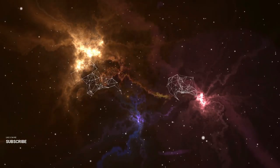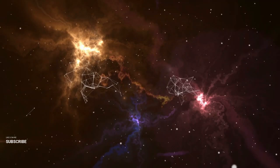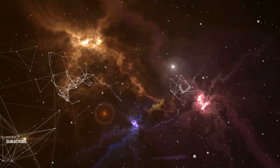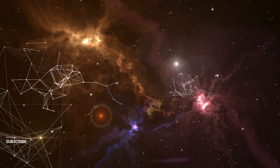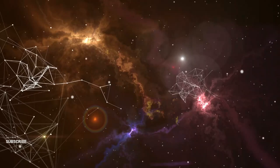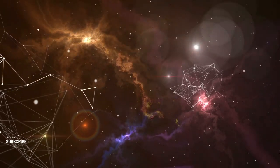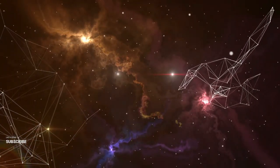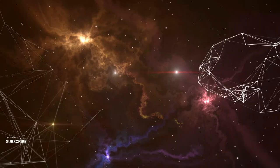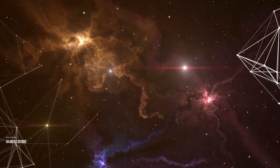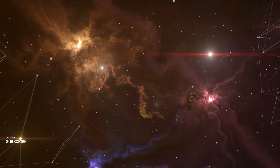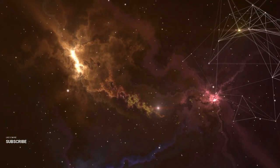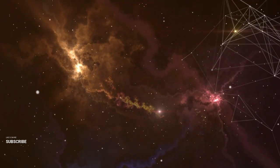Europa's thick ice shell is one of the most fascinating features in our solar system. It's believed to be between 10 and 15 miles thick, covering a liquid ocean that could be more than 60 miles deep. But what makes the ice shell so interesting is its potential to harbor life. Cracks and ridges on Europa's surface suggest that the ice is constantly shifting and moving, which means there could be a heat source beneath, possibly hydrothermal vents similar to those found on Earth's ocean floors. These vents provide the energy necessary to support ecosystems in total darkness, making them a prime target for future exploration.